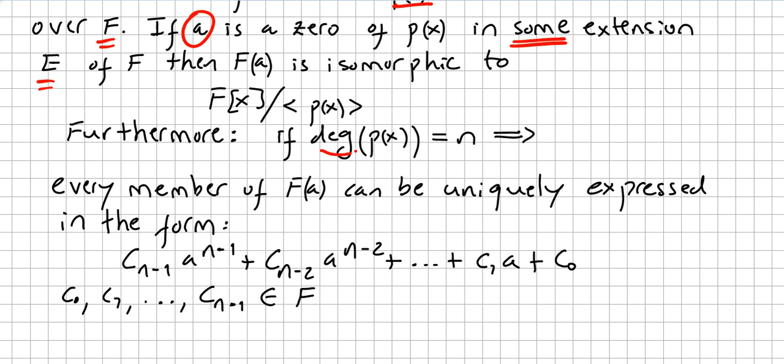If the degree of P is n, that implies every member of F(A) can be uniquely expressed in the form C_(n-1) a^(n-1) plus C_(n-2) a^(n-2) plus C_1 a plus C_0, where C_0, C_1 through C_(n-1) are all in the field.